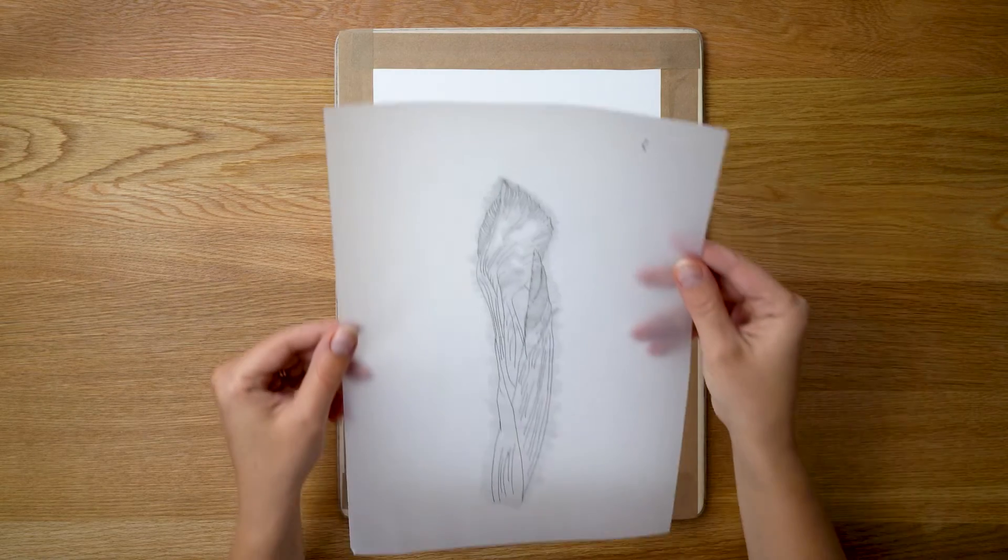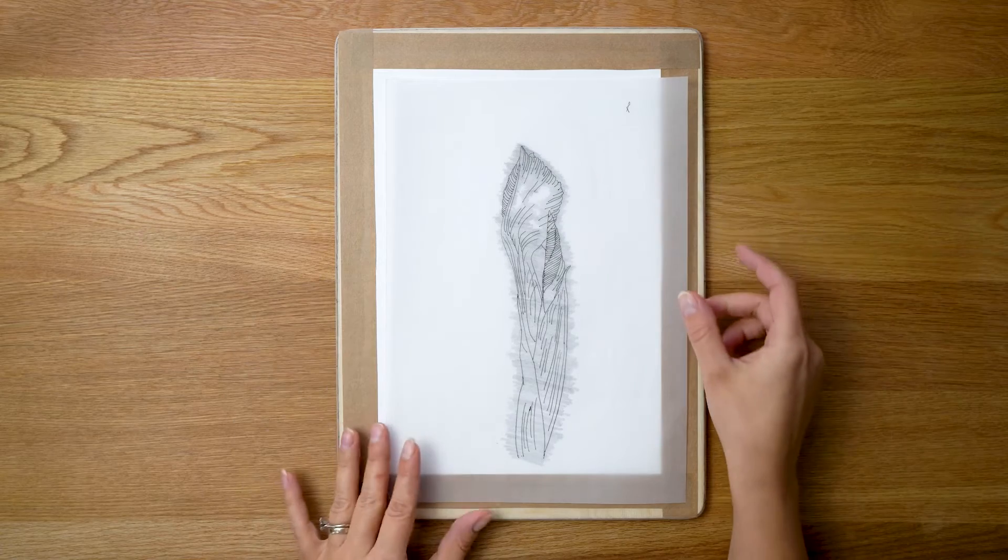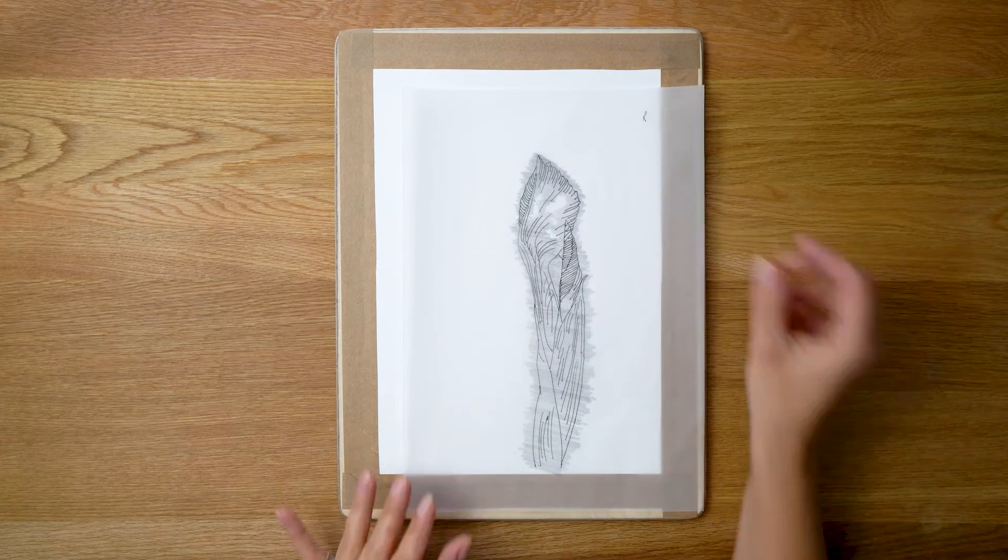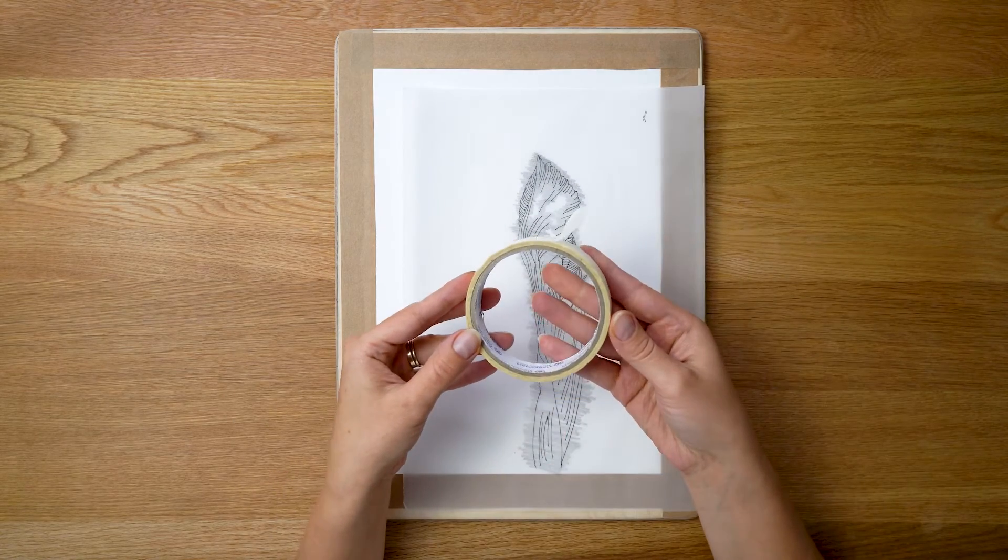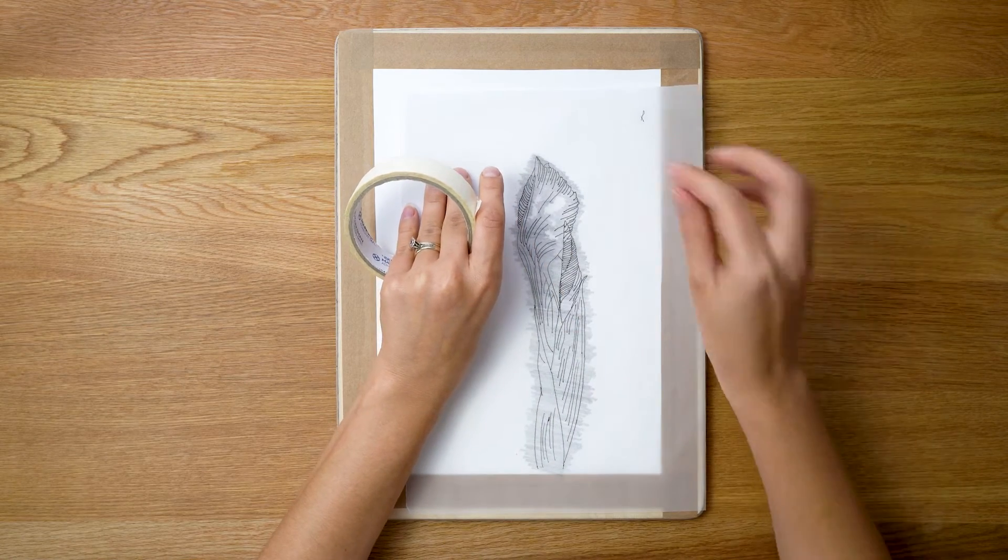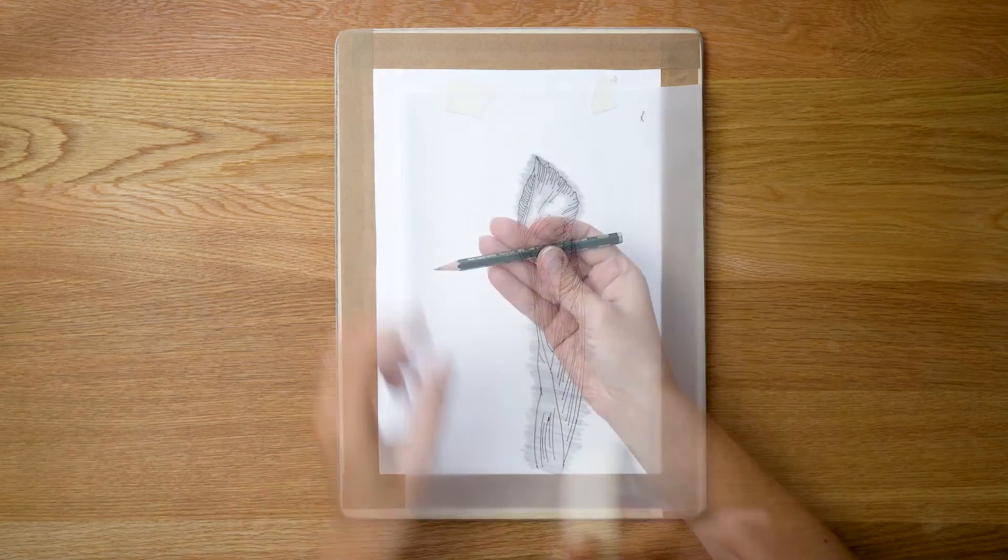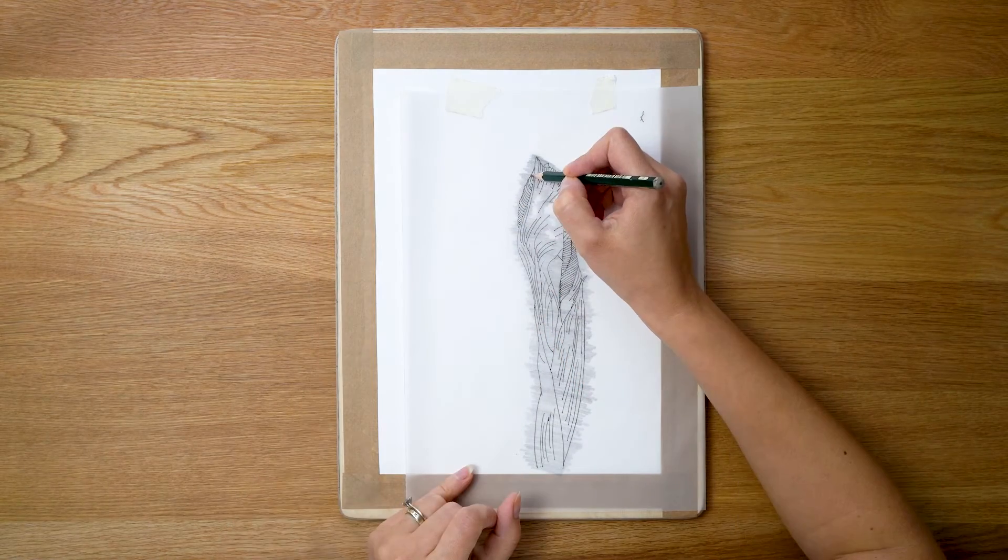Now I position my drawing onto the watercolor paper right side up and secure it with a little piece of masking tape to prevent it from moving around. Then I take a slightly harder pencil and start drawing. I make a few lines and check how it transfers on the watercolor paper.